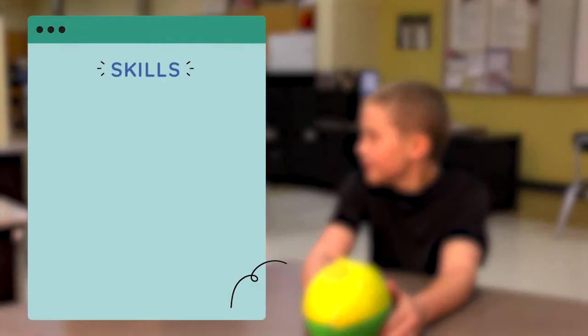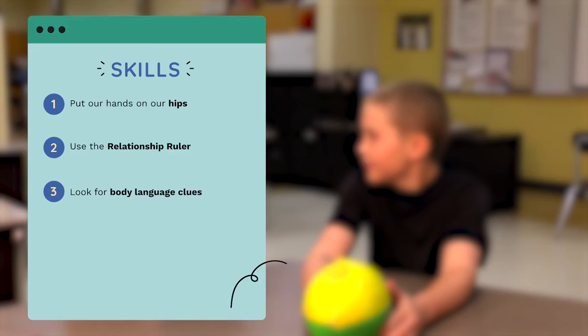To keep personal space, we put our hands on our hips. If we are touching someone, we are too close. Use the relationship ruler. Leave more space for acquaintances or strangers. Look for body language clues. Someone moving away from us is a clue that we are too close to them.